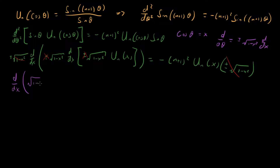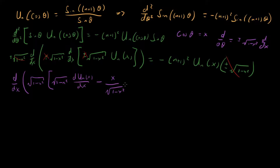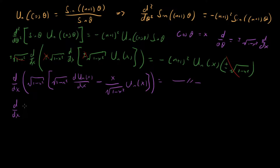Now let's do this product rule. We get two terms: one is root one-minus-x-squared times dU_n of x over dx, and the other comes from differentiating root one-minus-x-squared, giving one-half times minus two — so minus x over root one-minus-x-squared — times U_n of x. This combines with the outer root one-minus-x-squared to be one-minus-x-squared, and the other term cancels. So this simplifies to d/dx of one-minus-x-squared times dU_n over dx, minus x times U_n of x.